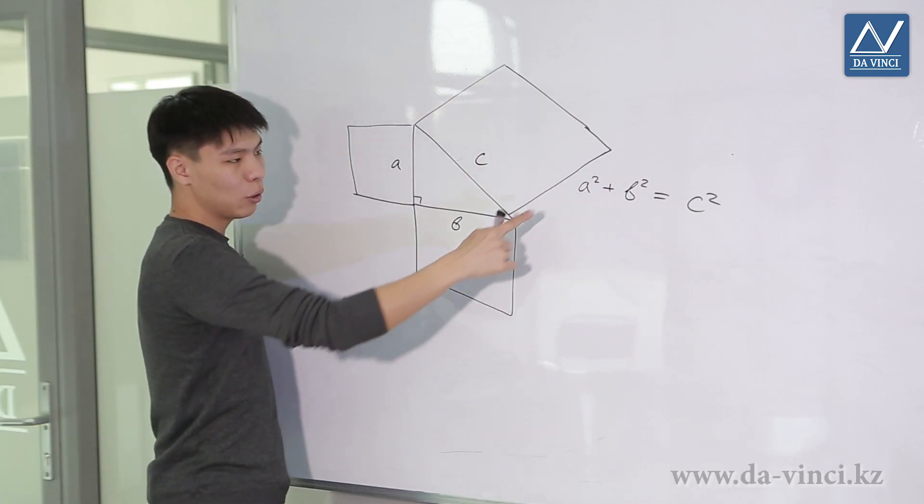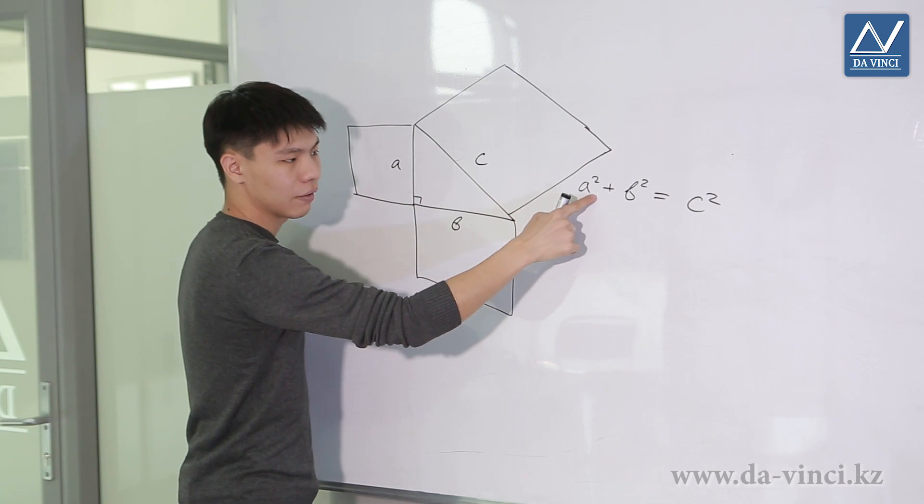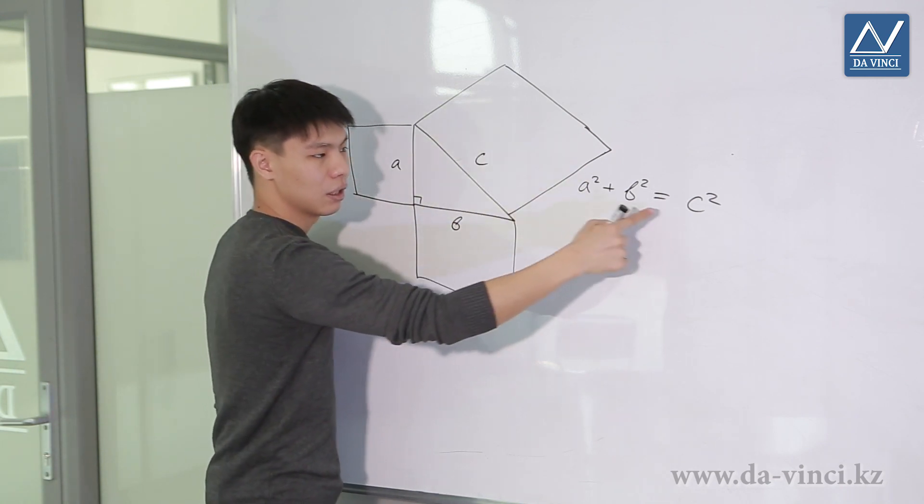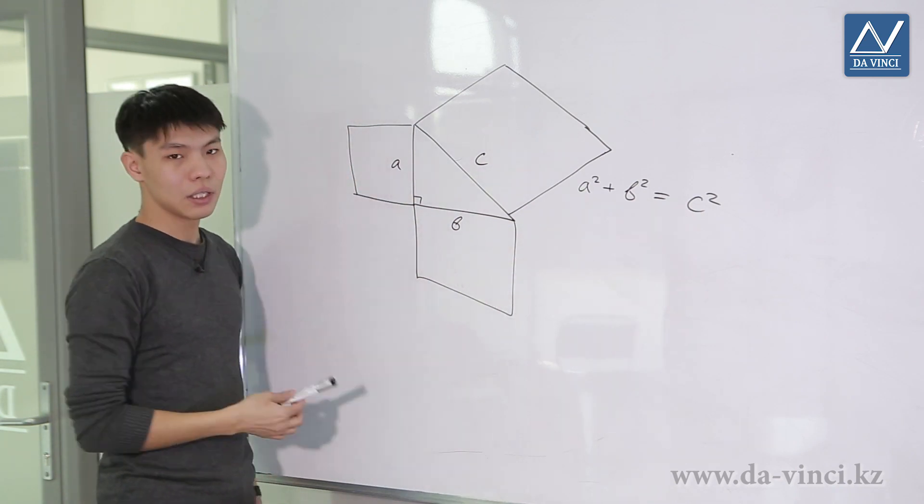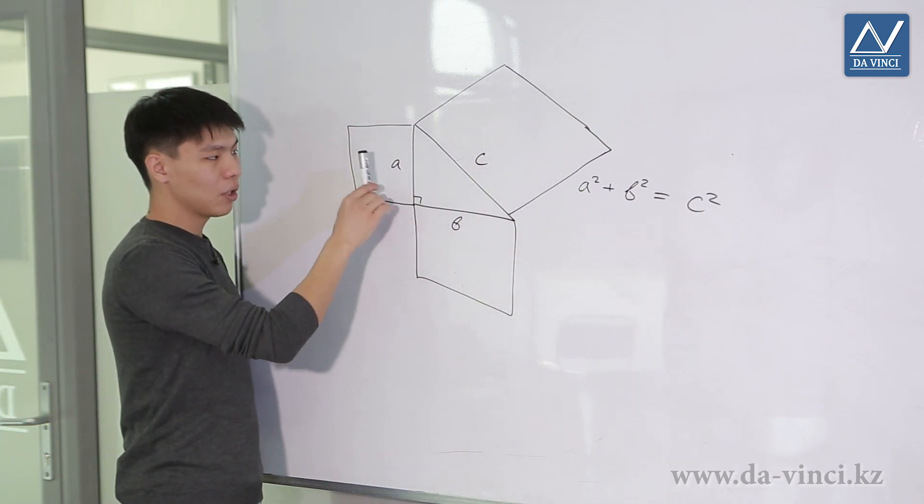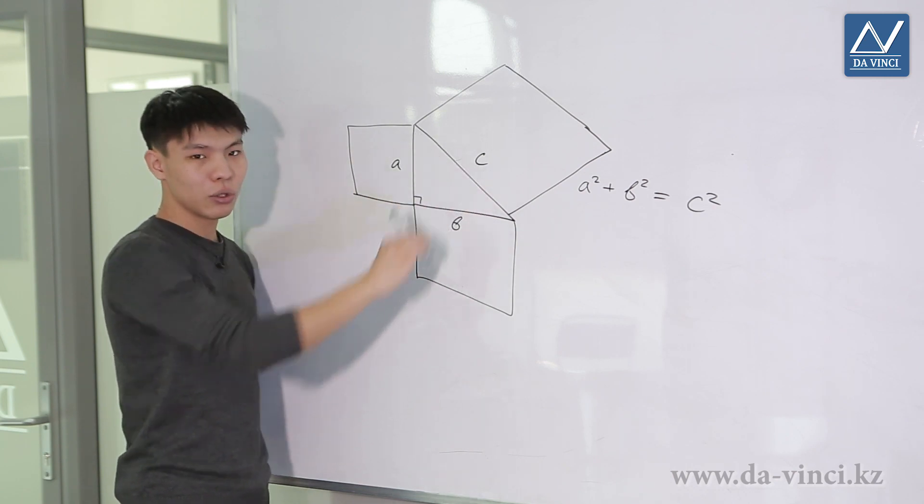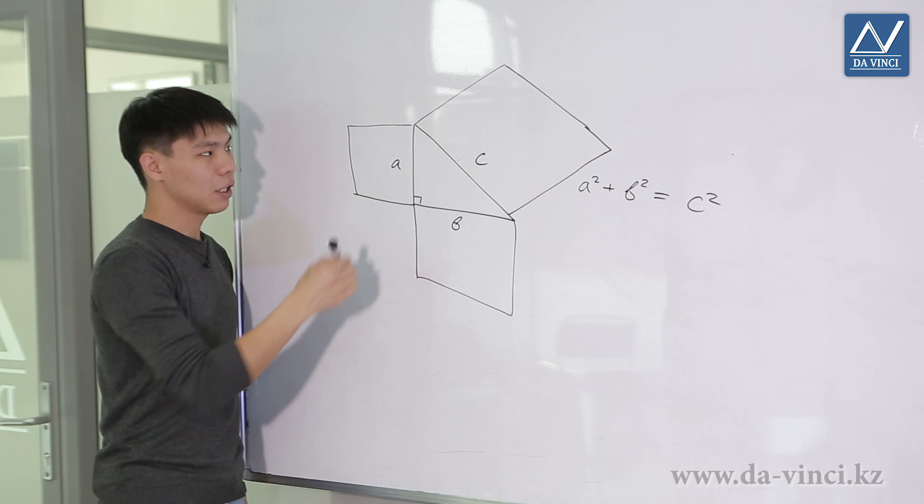Then we get that the area of this square, A squared, plus the area of this square, B squared, is equal to the area of this square, C squared. This is the geometric explanation of the Pythagorean theorem. The sum of the areas of the squares built on the legs is equal to the area of the square built on the hypotenuse.